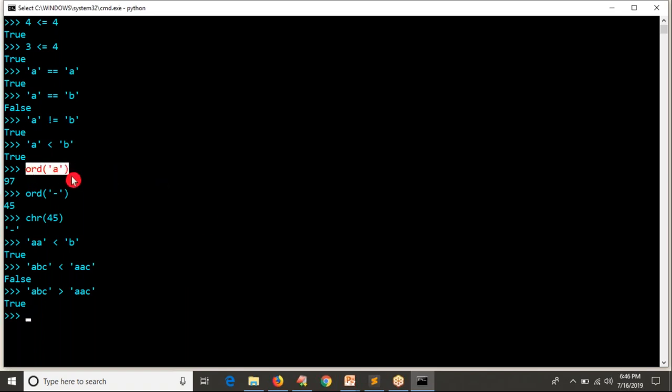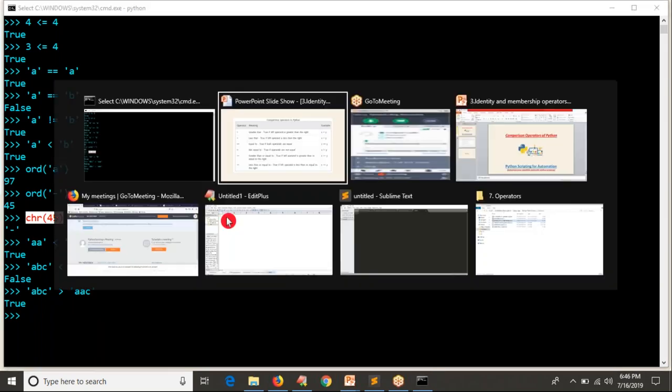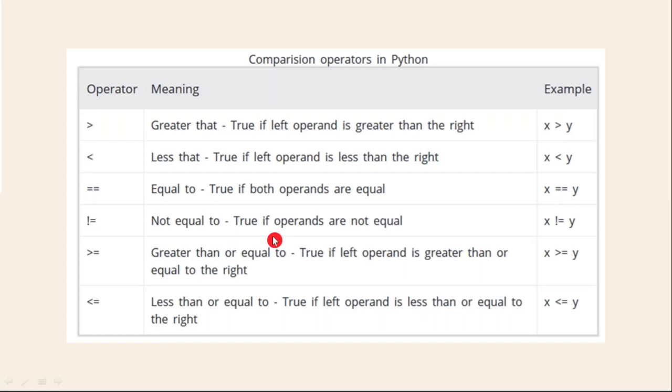To get the ASCII code of a character use the ord() function; to get the character from an ASCII code use the chr() function. These comparison operators are very helpful when discussing conditional statements like if, if-else, and else-if — we will use them effectively there. Comparison operators take input as either a number or a string, and output is always true or false, because you are checking the relation between two values.